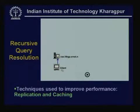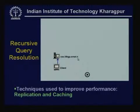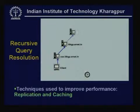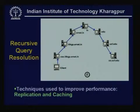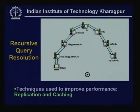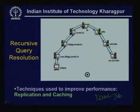Name resolution uses recursive query resolution: the client sends a query to its local server, which passes it to the next higher domain server — for example, from IITKGP.ERNET.IN to ERNET.IN to IN — until a server with the record is found, which then returns the IP address back down to the client.